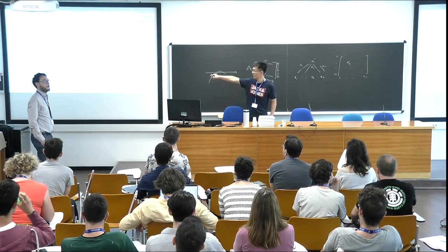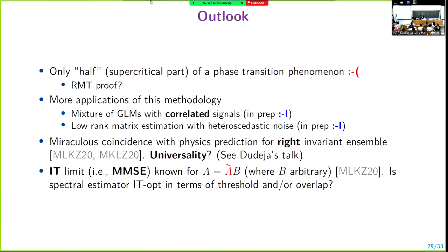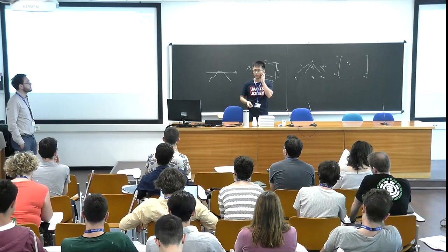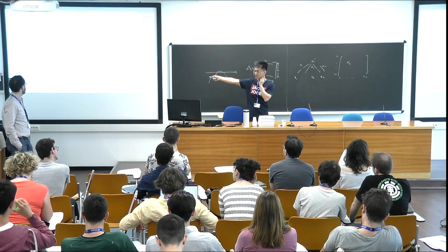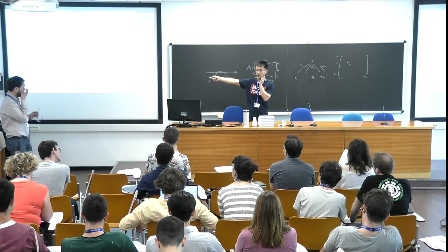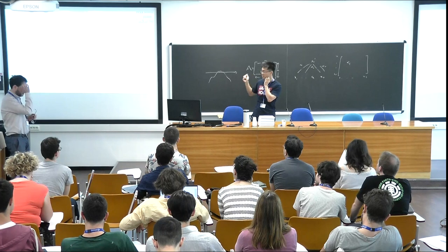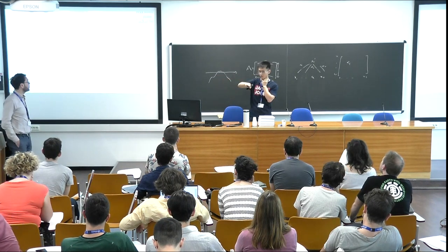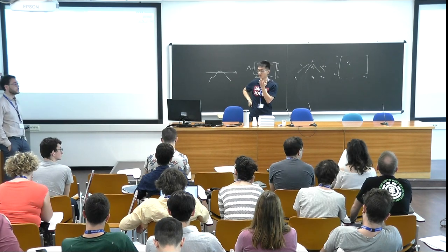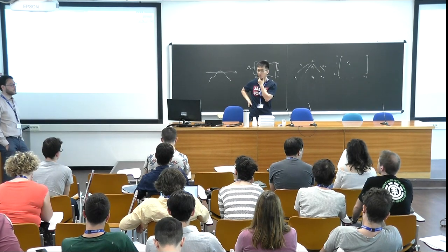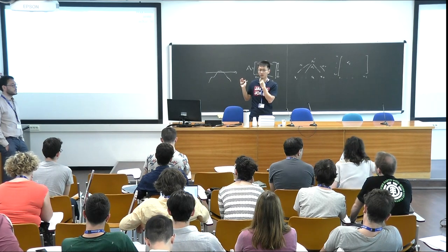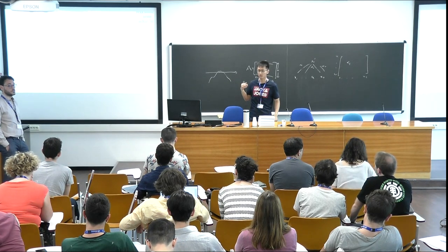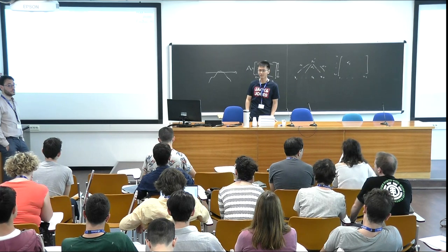Everywhere in that paper except the MMSE part is about right-rotationally invariant ensembles — general right-rotationally invariant, not necessarily Gaussian times something, just the general case. But just for the MMSE part, they look at Gaussian times arbitrary matrix, which is a special case of our model, and that result seems to be rigorous using the adaptive interpolation method. I don't know how that formula compares to, for example, my eta, and how the threshold compares to my threshold — I didn't do that comparison.